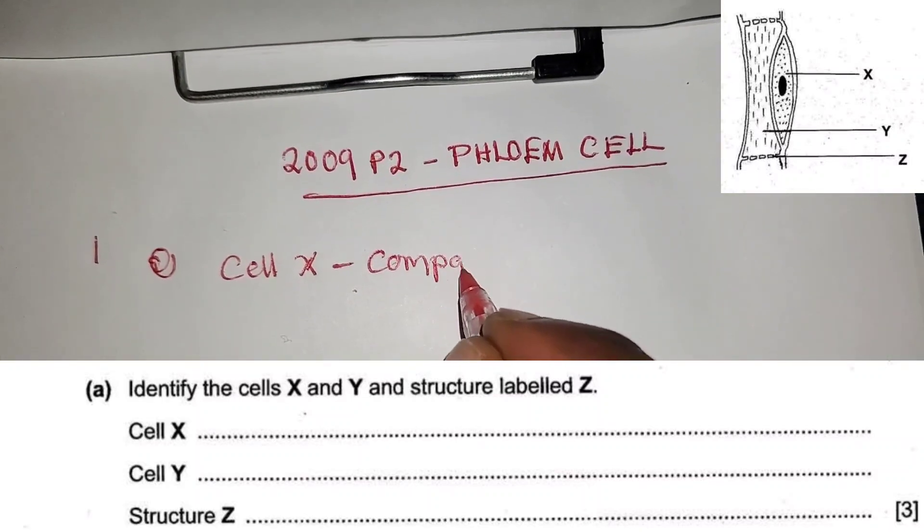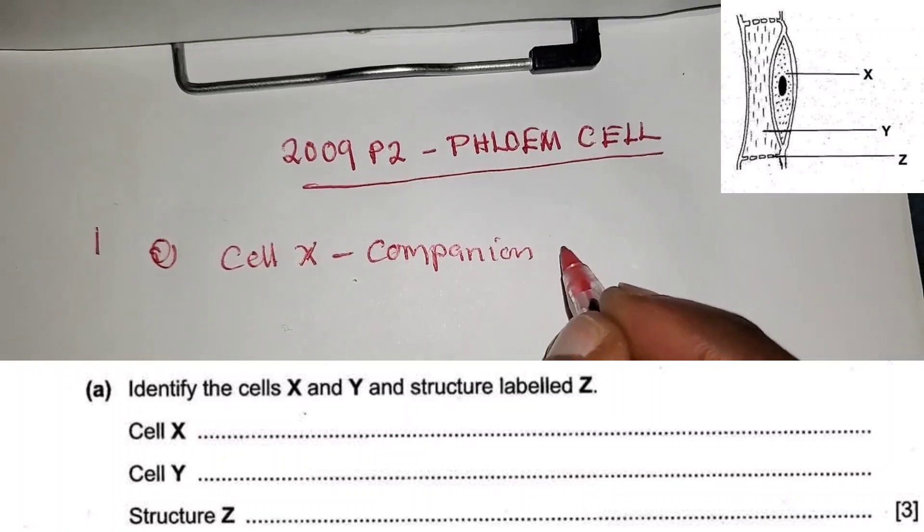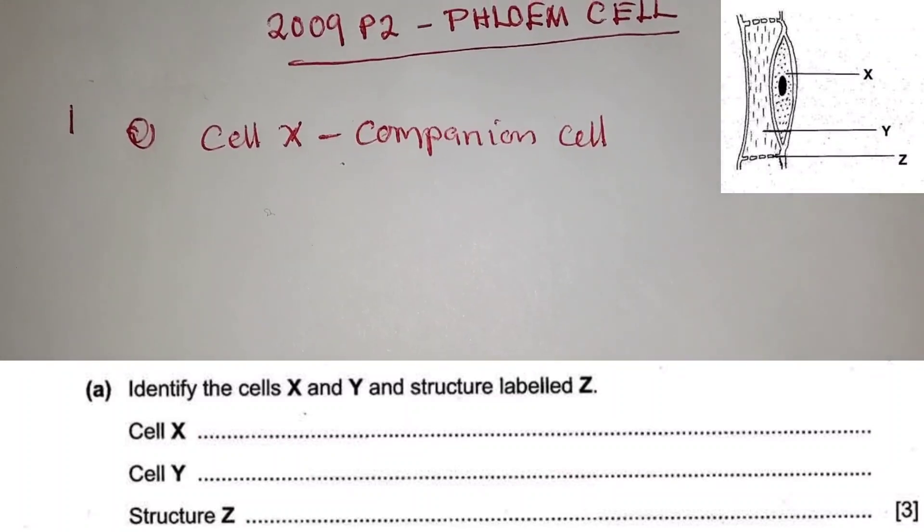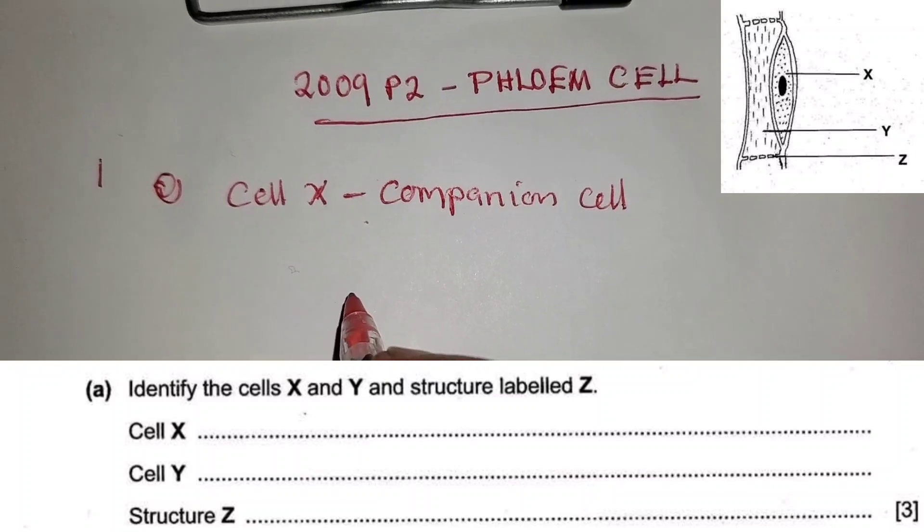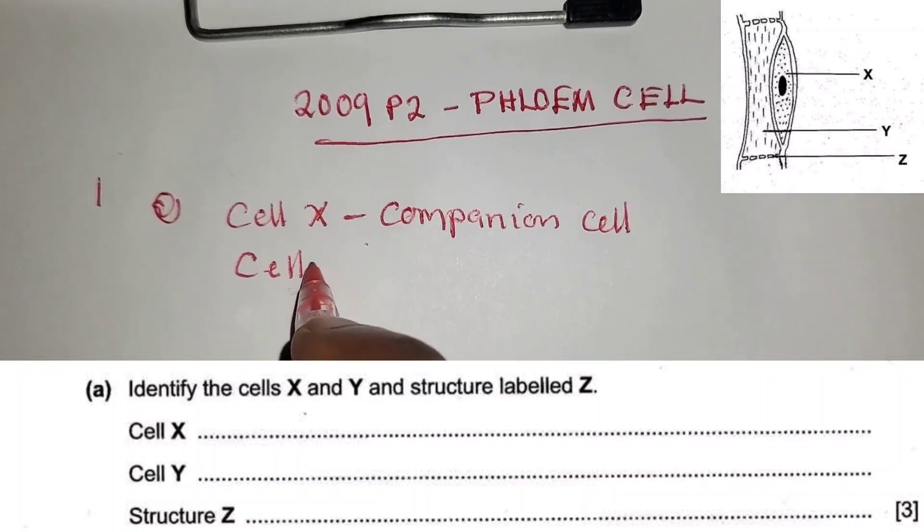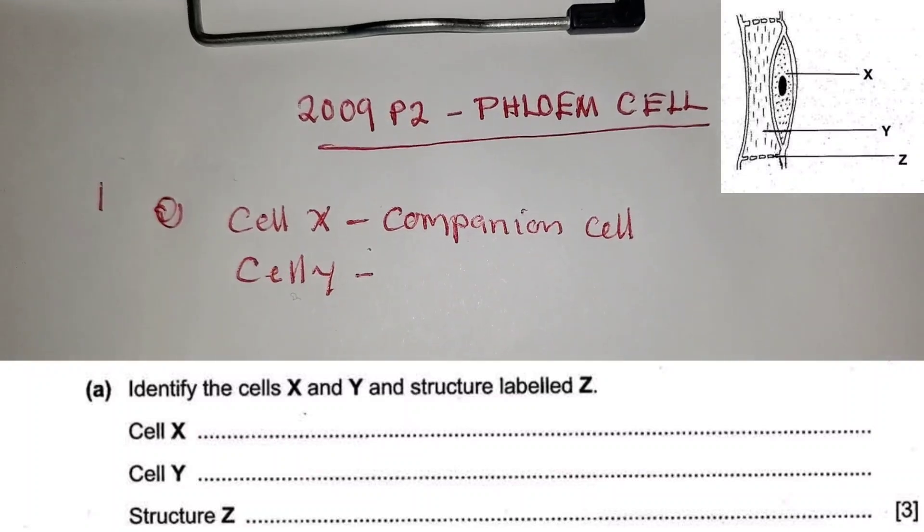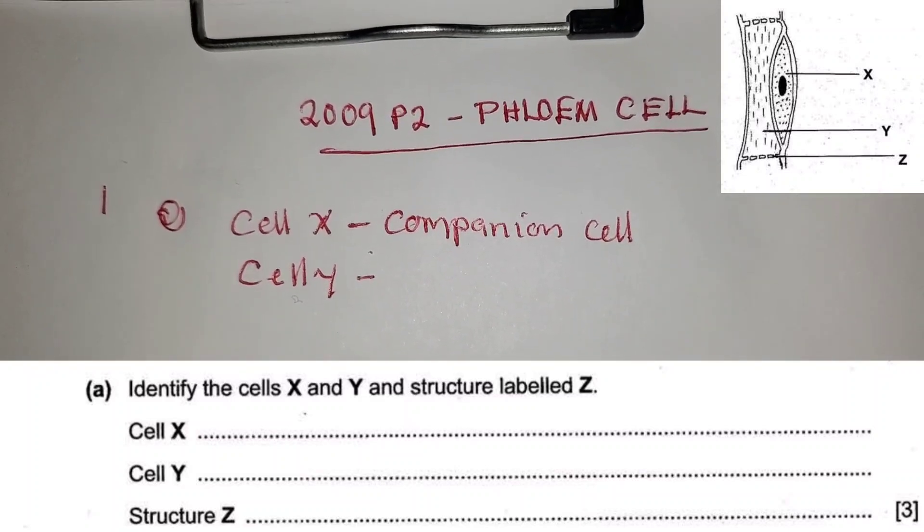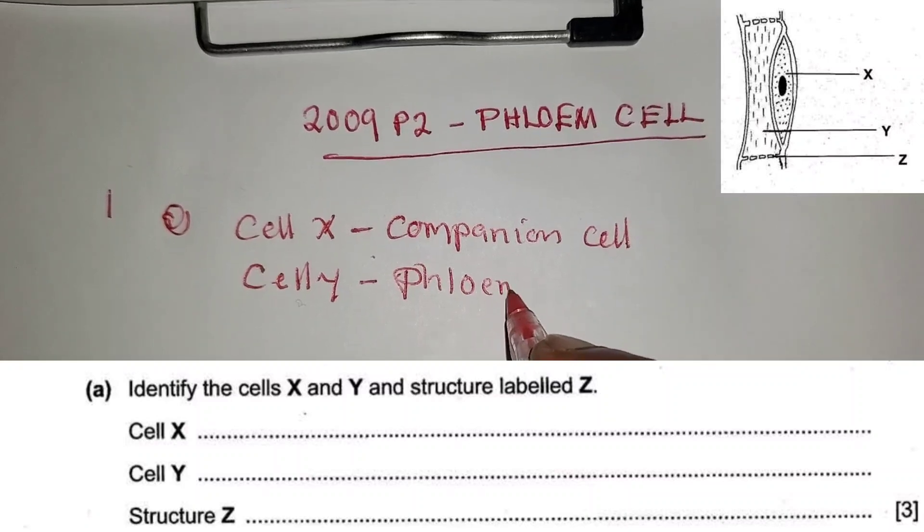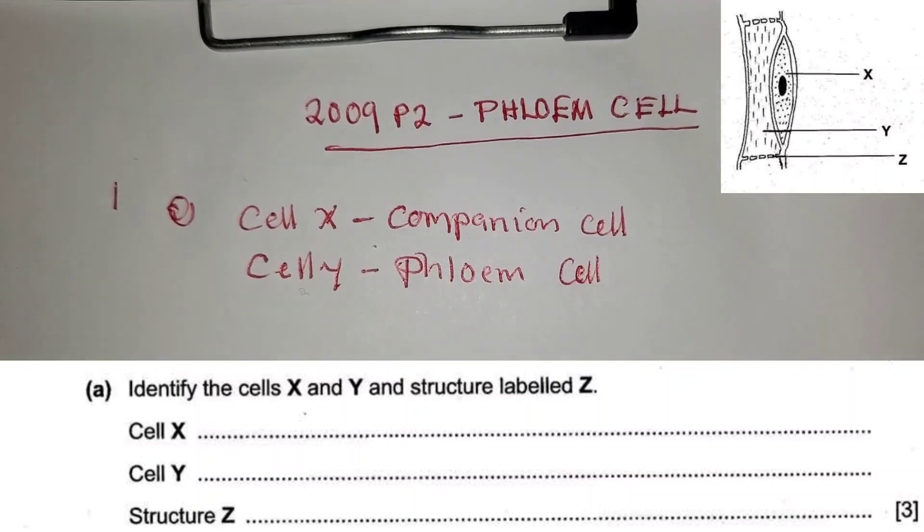Companion cell. Then cell Y, cell Y, which is the whole cell, this is the phloem. Phloem cell.